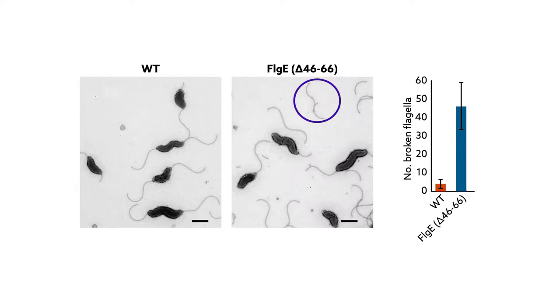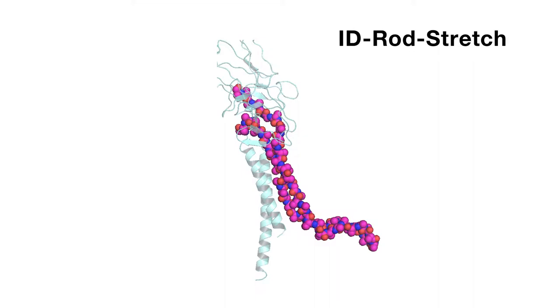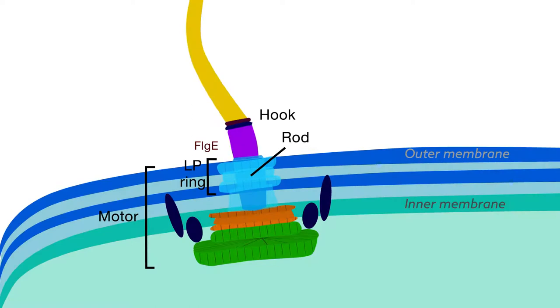The results demonstrate that despite its disorder, ID Rod Stretch is critical for flagella formation and stability. As a result, the disordered segment may be a good target for new drugs that fight bacterial infections, especially Campylobacter, which uses its flagella to move and secrete toxins.